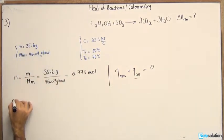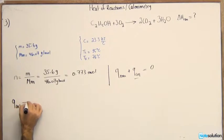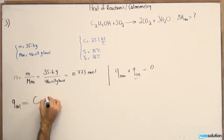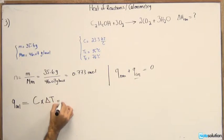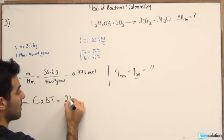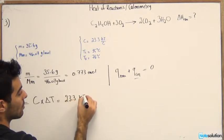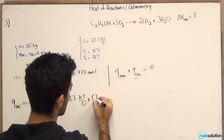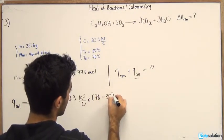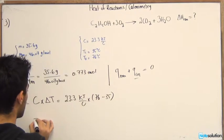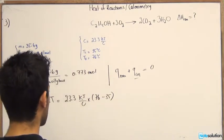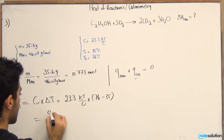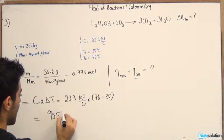The Q calorimeter is C times delta T. So heat capacity times the difference in temperature. So if we do the heat capacity, that would be 23.3 kilojoules per Celsius times the difference 76 minus 35. That would give you, if you do the calculations, that should give you 955 kilojoules.